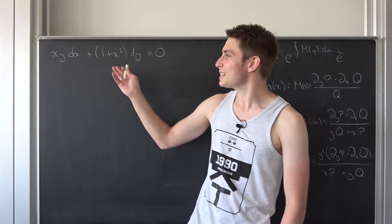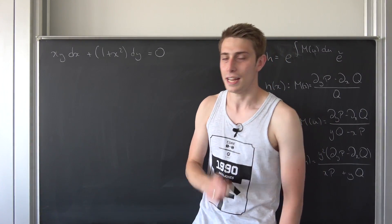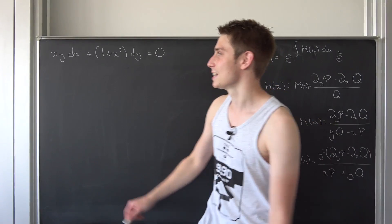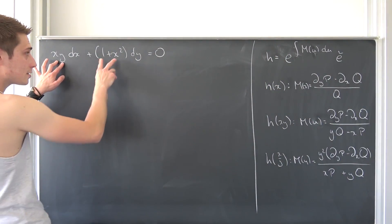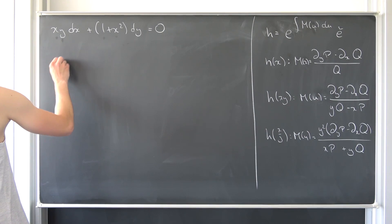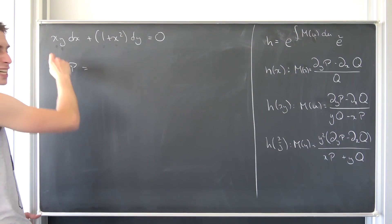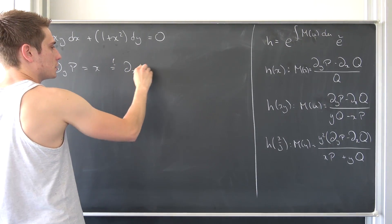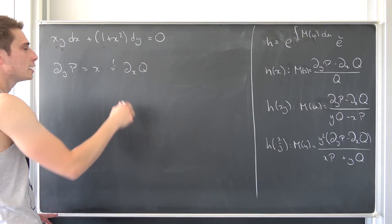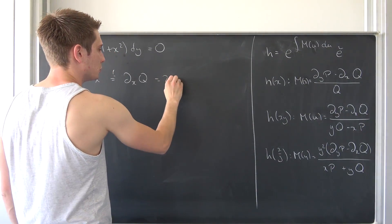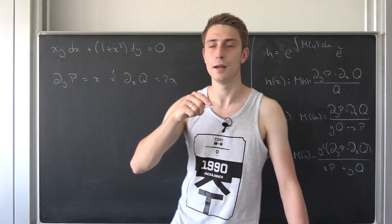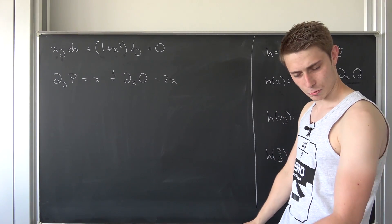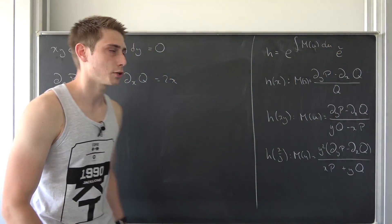First we have to check if this equation is exact or not. It's not exact — that's why we are talking about non-exact differential equations. So if this is our P and this is our Q, what we want to do is differentiate our P with respect to y, leaving us with just x. But is this equal to ∂Q/∂x? If we differentiate Q with respect to x we get 2x — there's a factor of 2. It's not exact, meaning we actually have to find an integrating factor.